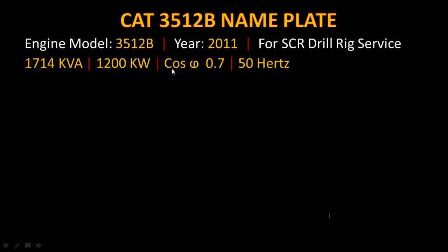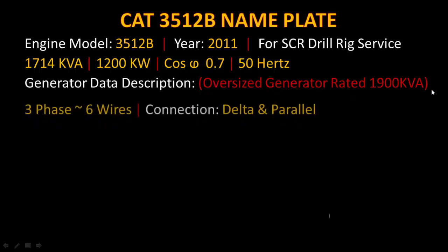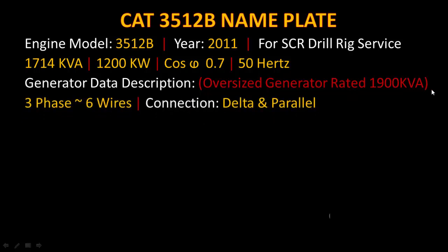Now we see its power factor, real power, and apparent power. Its power factor is 0.7, represented by cos phi. Its real power is 1200 kilowatts and its apparent power is 1714 kVA. The generator frequency is 50 Hz.